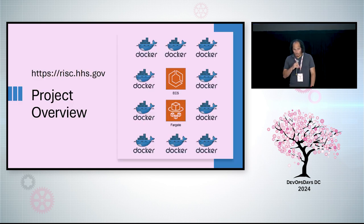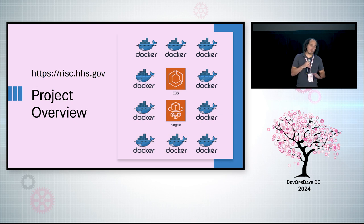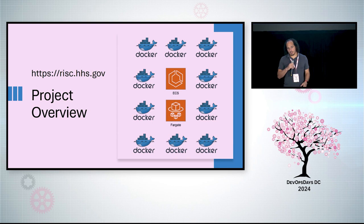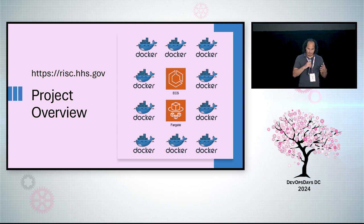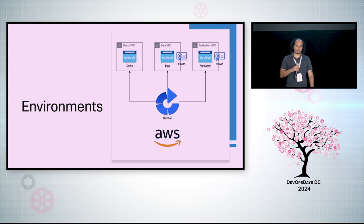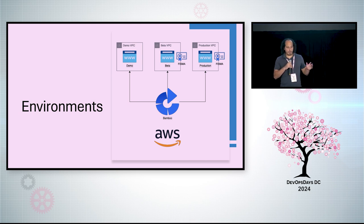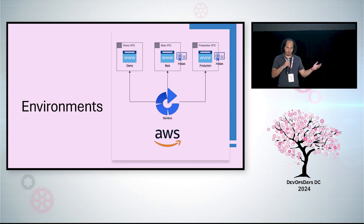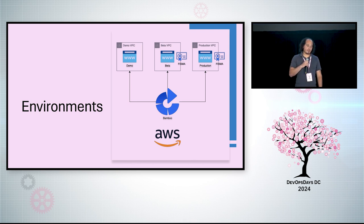Our platform for health and human services consists of over 10 microservices, all hosted on AWS, orchestrated by ECS, and utilizing serverless Fargate. We have three environments — our demo, beta, and production — each in their own separate VPCs with no cross communication. Our production and beta environments are FISMA Moderate certified.